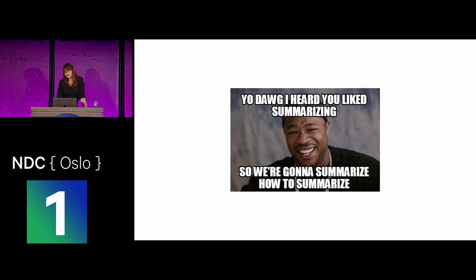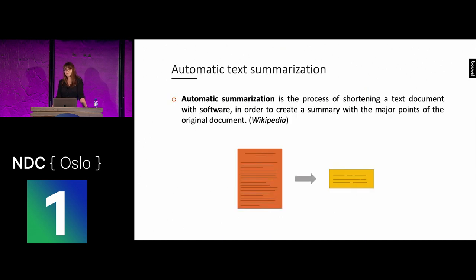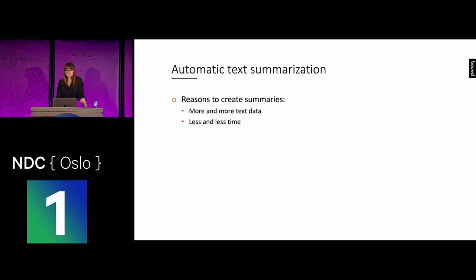Text summarization in general is the process of shortening a text document in order to create a summary with the major points of the original document. Automatic text summarization is the same thing, but instead of manually created summaries, we are using software. There are many reasons to create a summary, but the main reason is that we have more and more text data and less and less time to process it. Today, with all the digitalization and the internet being an endless source of text data, we are kind of flooded with textual information, and it's really hard to find relevant information in all this amount of text.